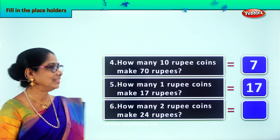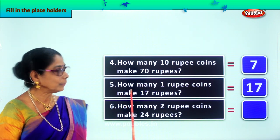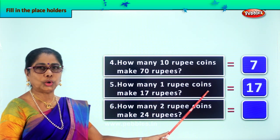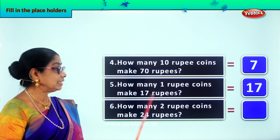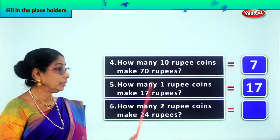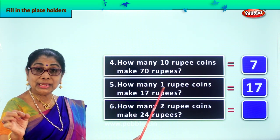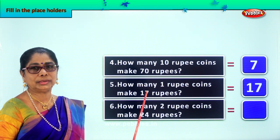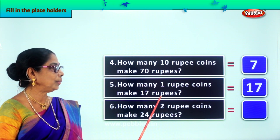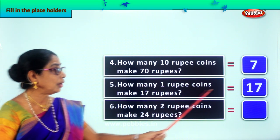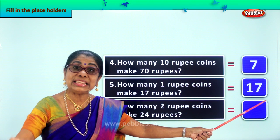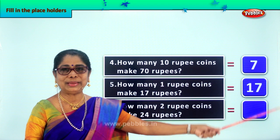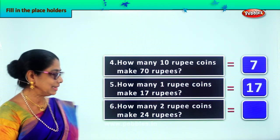Yes. Let's take the next example. How many 1-rupee coins make 17 rupees? You need 17 one-rupee coins to make 17 rupees. So how many 1-rupee coins? We need 17 one-rupee coins to make 17 rupees. Yes. Next: